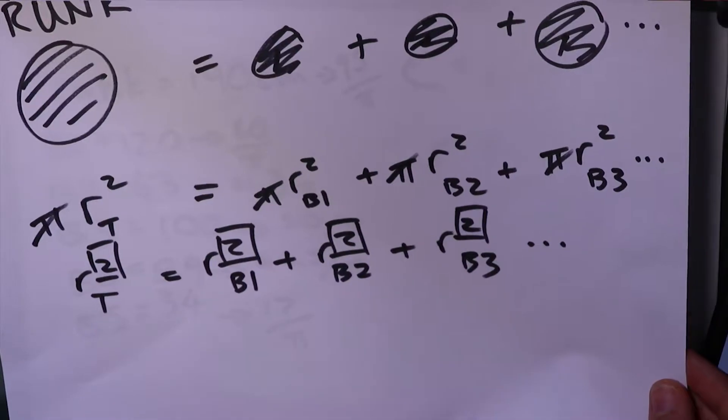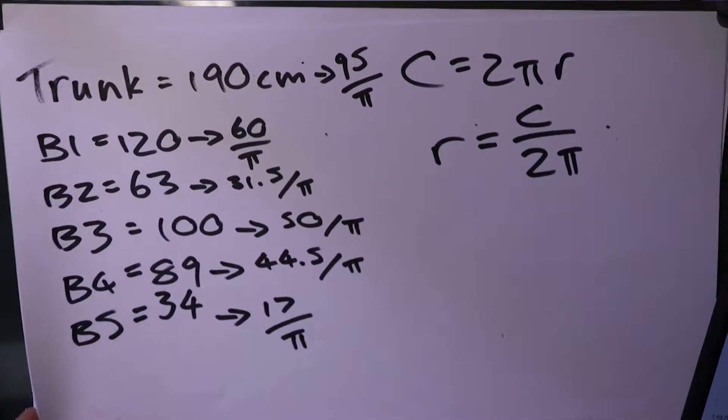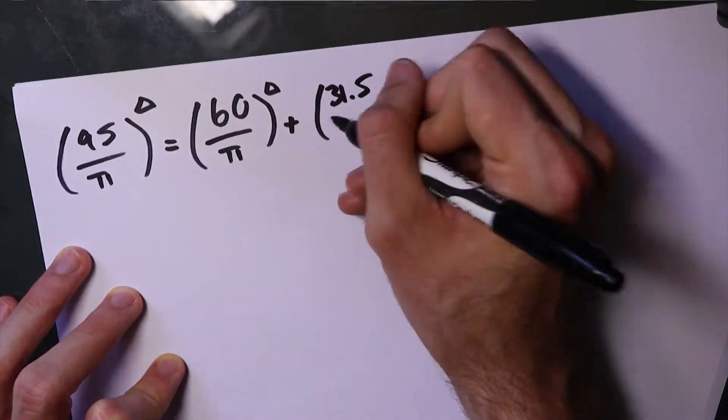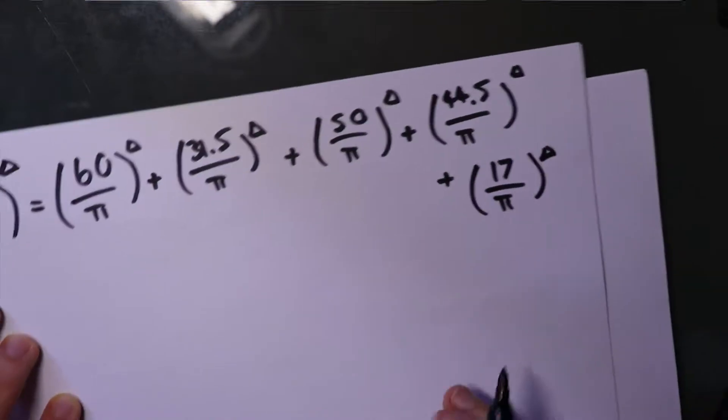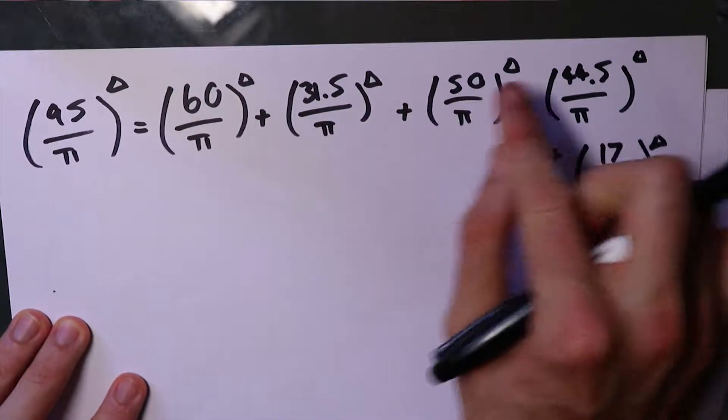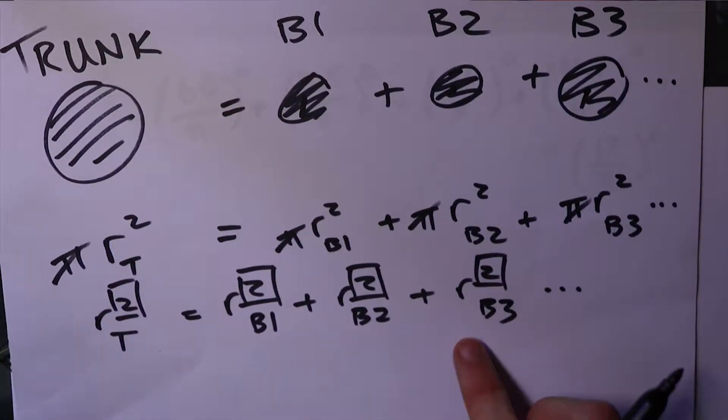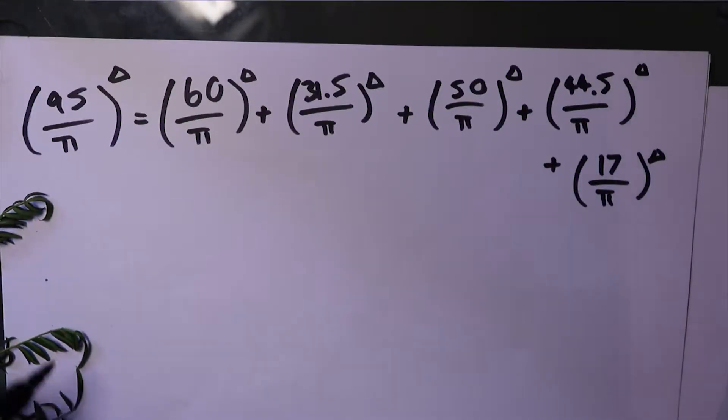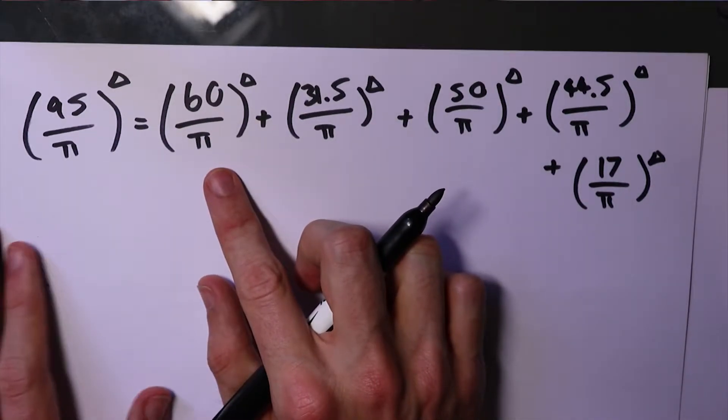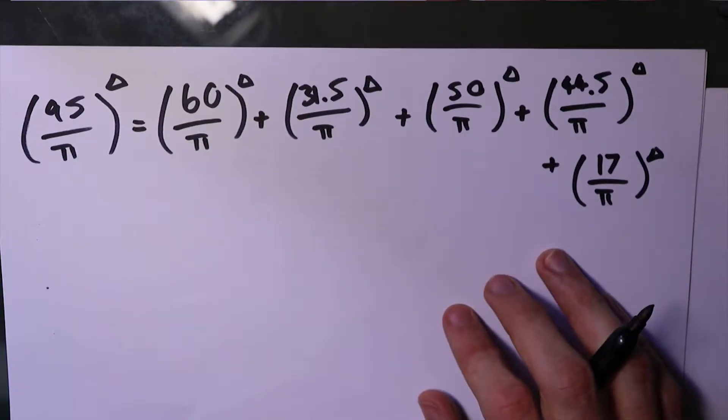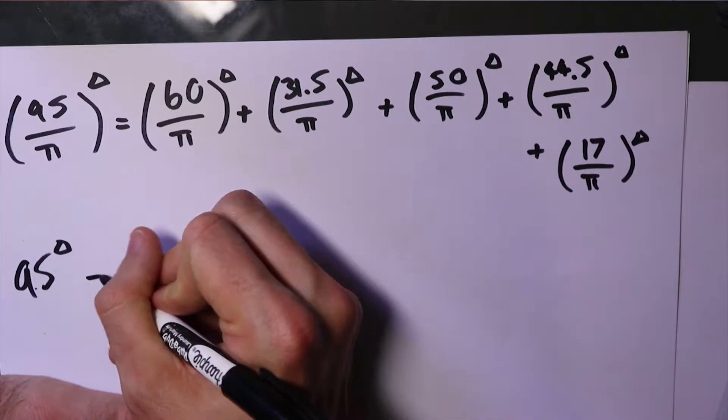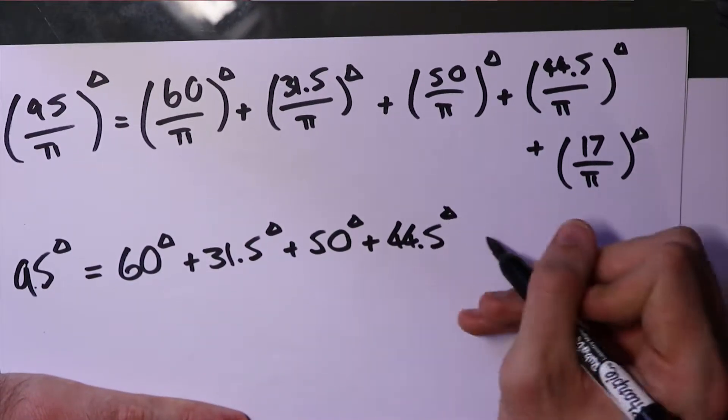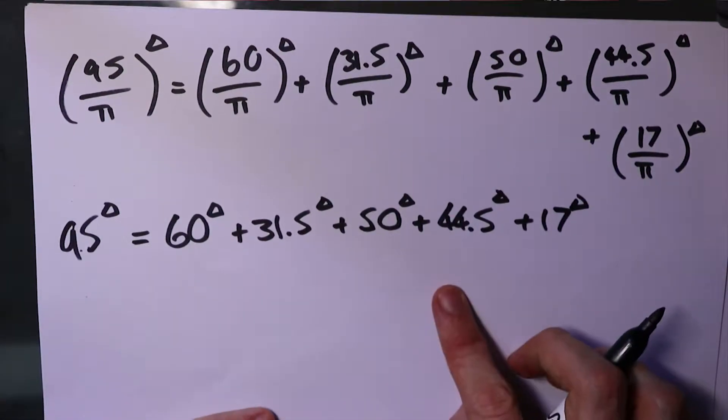So now we're just going to sub that in to this relationship here. So I'll get a fresh piece of paper. So here the Leonardo exponent, I've just represented it with a triangle, but it's the exact same relationship as we had here. This is the trunk radius, radius of the first branch, second branch, third branch, fourth branch, fifth branch. Now we can just cancel out this pi here. So we're just left with 95.